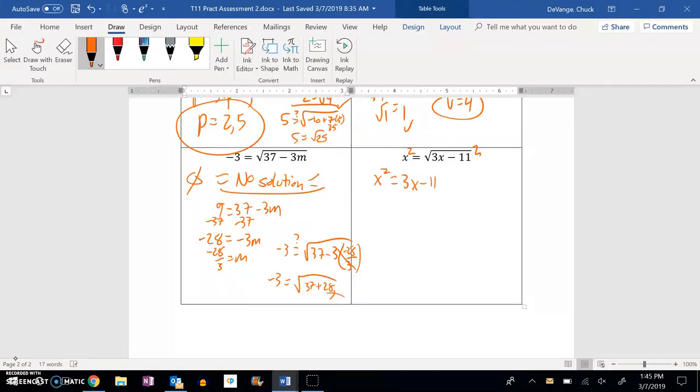I have a quadratic. So, I'll get it equal to 0 by subtracting the 3x and adding the 11.